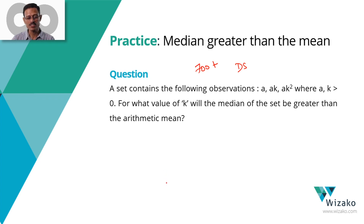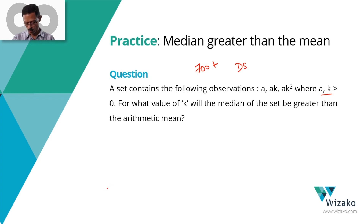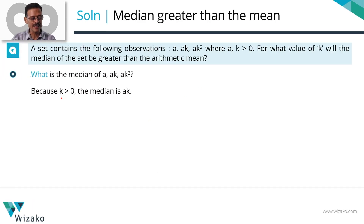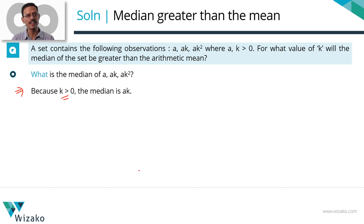A set contains the following observations: A, AK, AK², where both A and K are positive. What we need to find out is for what values of K will the median of the set be greater than the mean of the set? Because K is greater than 0, the median is AK. For the moment, kindly take this as given — let's not question this. Let's do this as part of the theory towards the end of the video. Right now, let's take this result as God-given and move on.